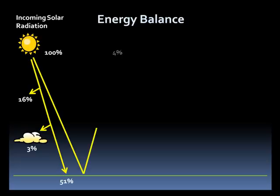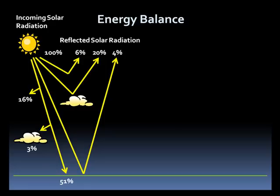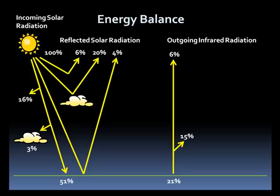4% is reflected directly back into space, 20% reflected by clouds, and 6% reflected back by the atmosphere. The Earth has to do something with that 51% absorbed, and it re-emits it as infrared radiation. Let's see how this stacks up. 21% is emitted back into the atmosphere, with 15% being reabsorbed, and 6% making it back into space.